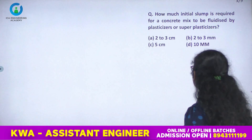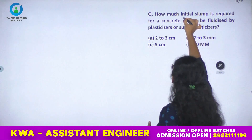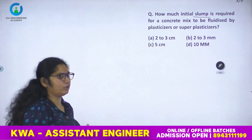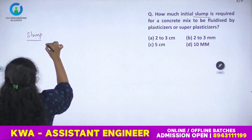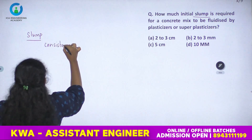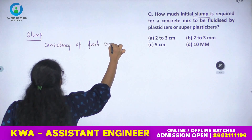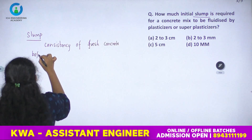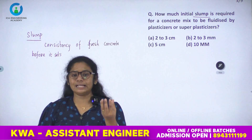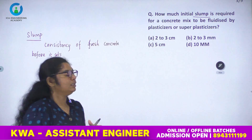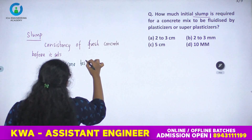The second question: how much initial slump is required for a concrete mix to be fluidized by plasticizer or superplasticizer? Slump is the consistency of fresh concrete before it sets. This is tested by the slump cone test.